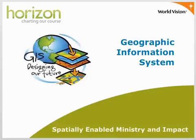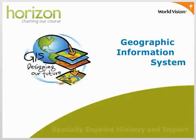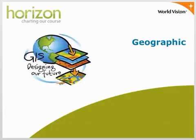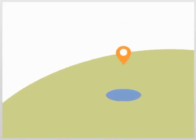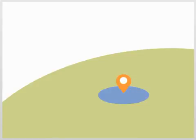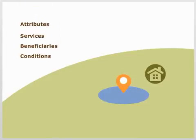GIS is computer software for capturing, storing, and displaying geographic information related to positions on the Earth's surface. It links geographic information — where things are — with descriptive information — what things are.